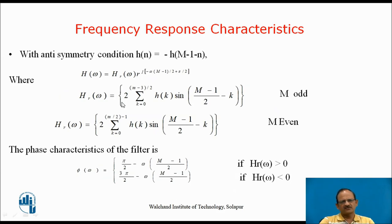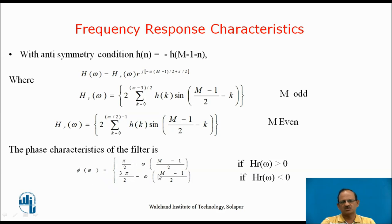In the case of anti-symmetry, H(ω) can be written as HR(ω)·e^(j(−ω(M−1)/2 + π/2)), where HR(ω) = 2·sum from k=0 to (M−3)/2 of h(k)·sin((M−1)/2 − k) when M is odd, and HR(ω) equals the corresponding expression when M is even. In this case h((M−1)/2) = 0 because of the anti-symmetric condition. The phase characteristic is φ(ω) = π/2 − ω(M−1)/2 when positive, or 3π/2 − ω(M−1)/2 when negative. This frequency characteristic equation can be used for designing symmetric and anti-symmetric FIR filters.